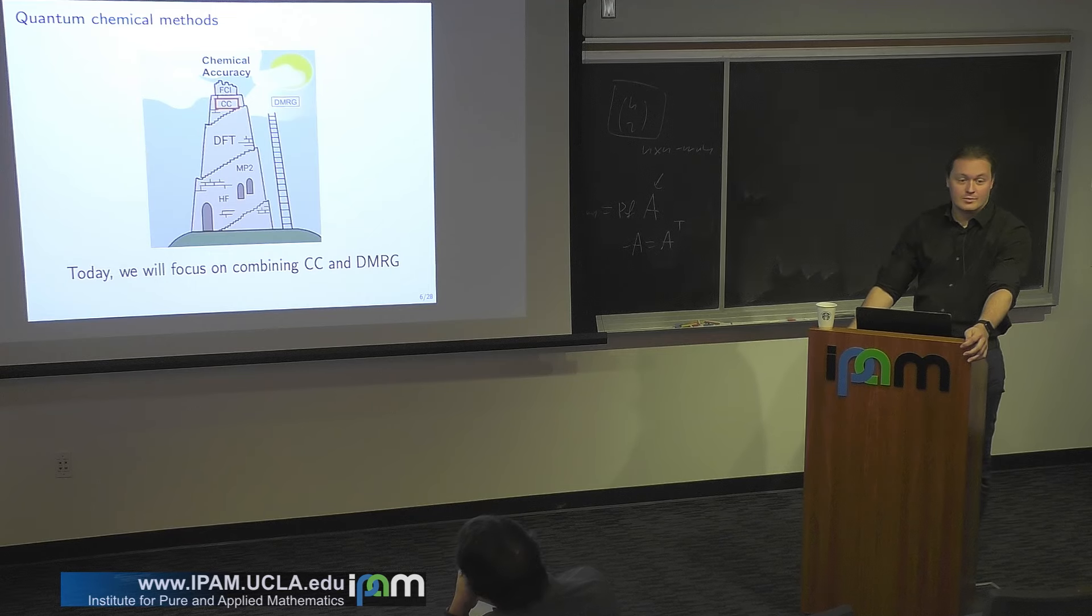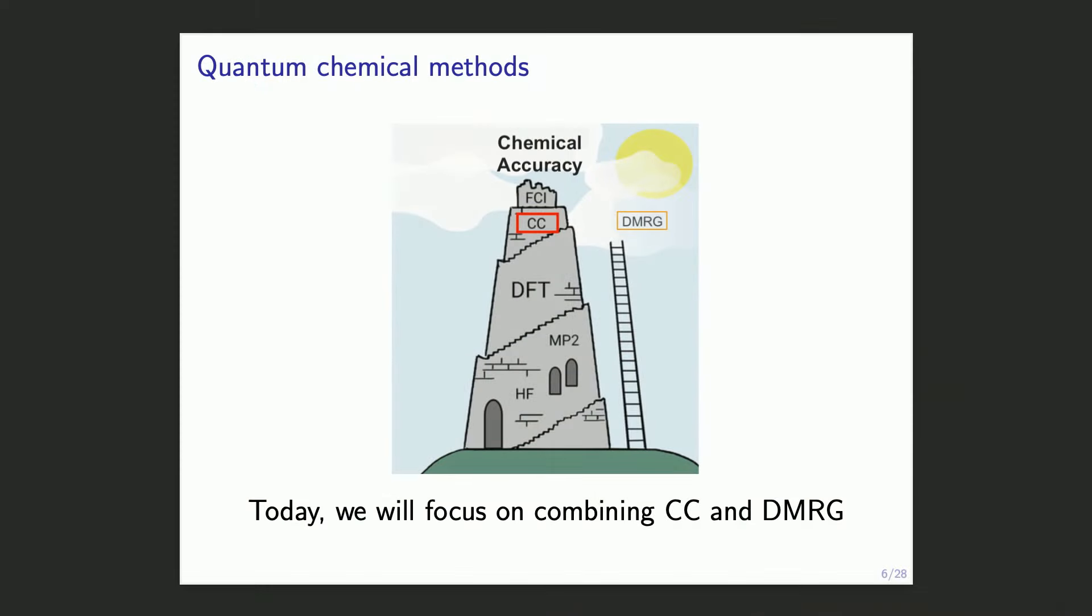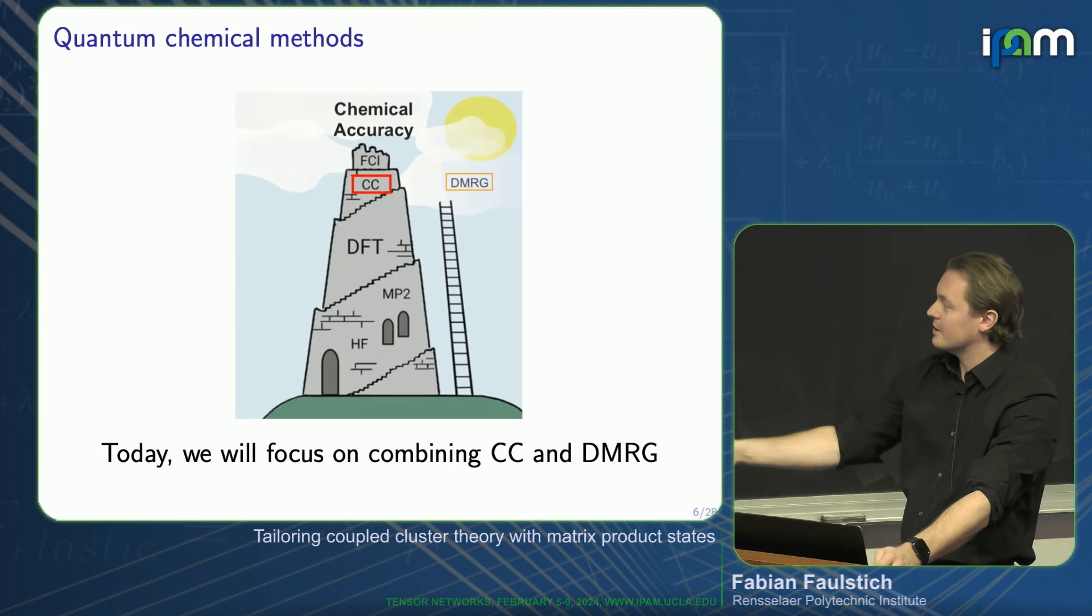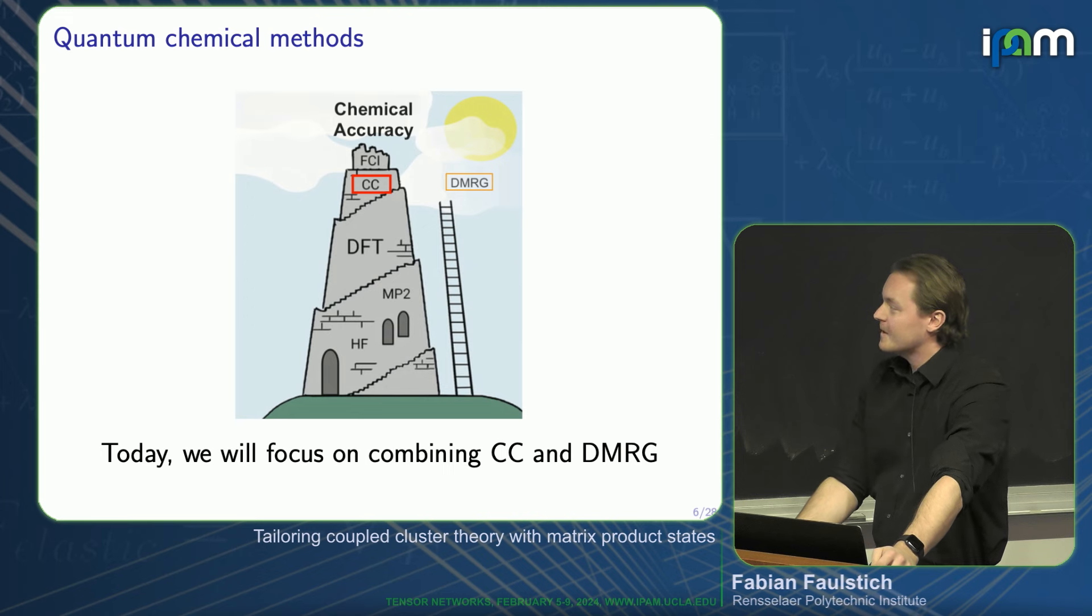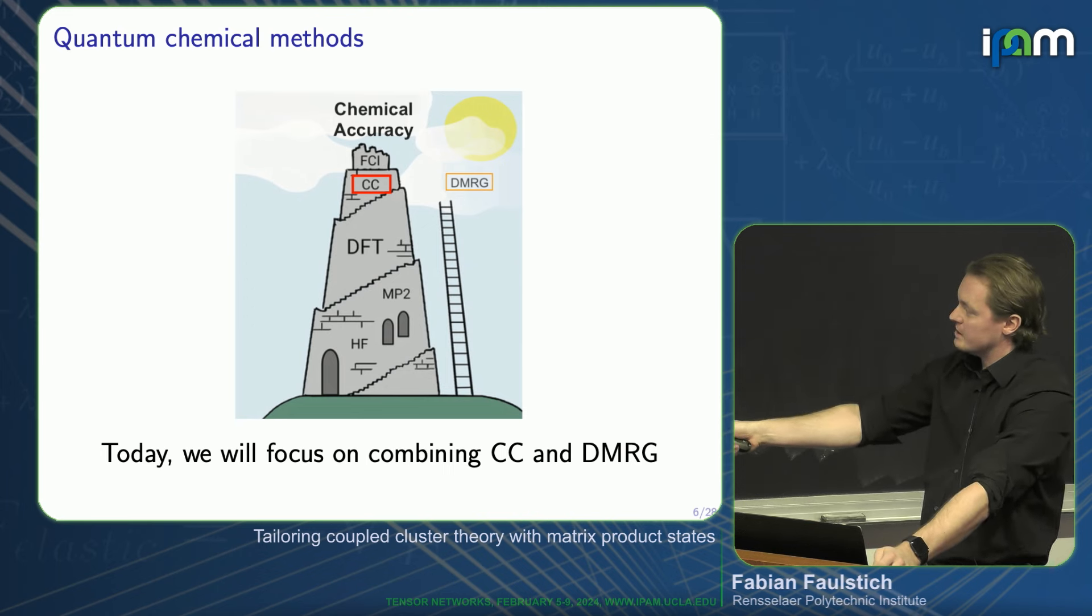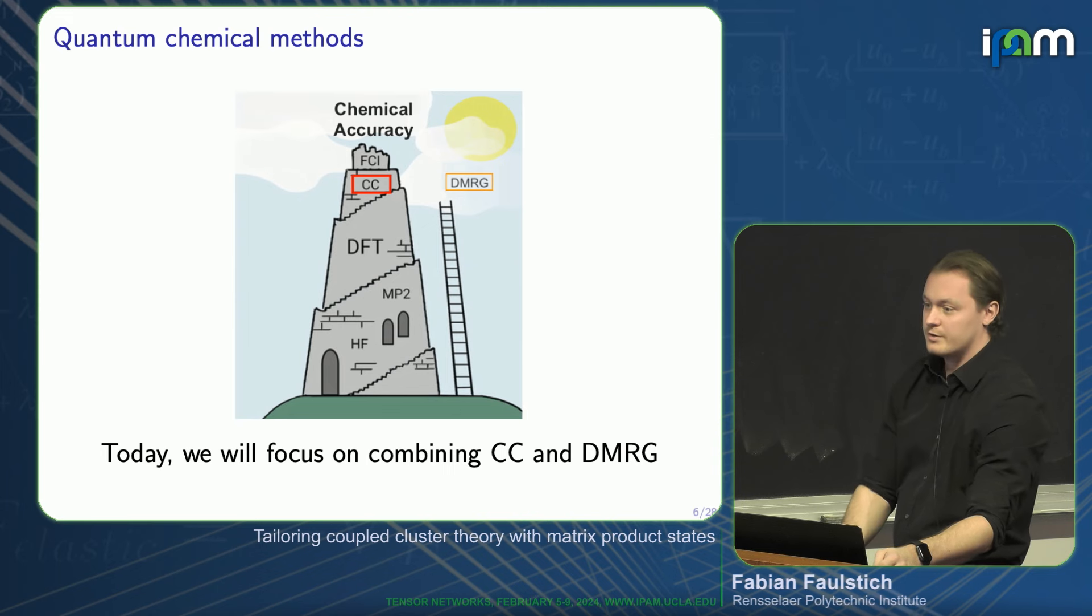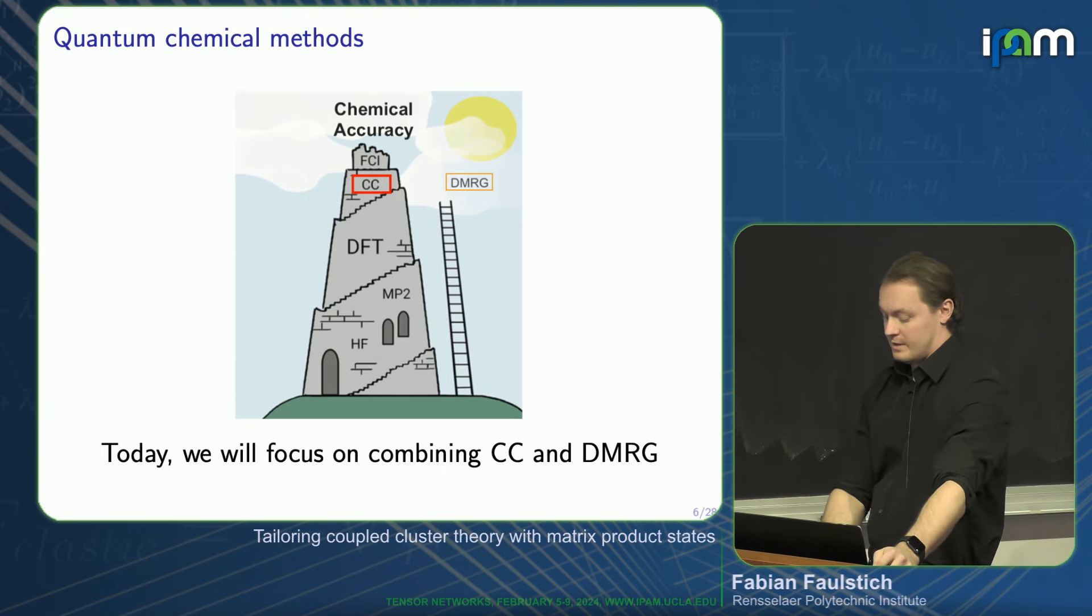So for quantum chemical problems, approximation is key, and this is what people have been doing for the past, well, since the invention of the computer. When you Google quantum chemical methods, what you find is a bewildering zoo of abbreviations: Hartree Fock, MP2, DFT, and so on. They all have their own merit and benefits. You can see in this picture that as you go up in this tower, you increase in accuracy. And now, thanks to Steve, we have this ladder that allows us direct access to the heaven of chemical accuracy.